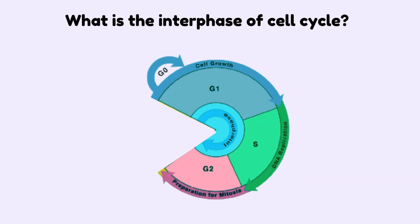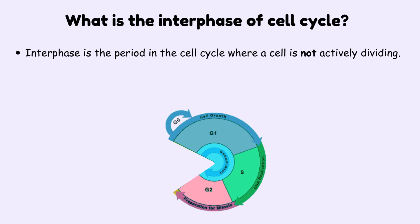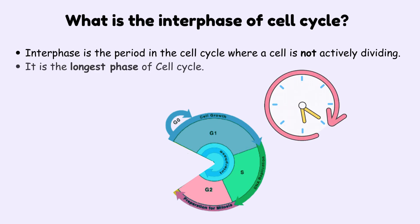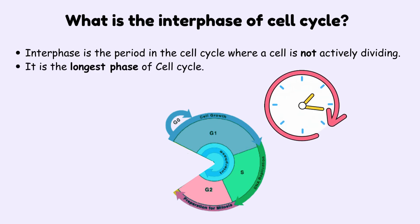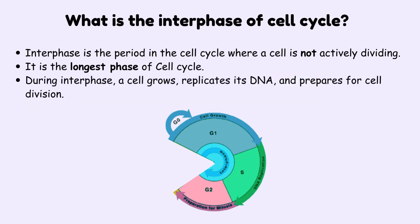What is the interphase of the cell cycle? Interphase is the part of the cell cycle where the cell isn't actively dividing. In fact, it's the longest phase of the cycle. During interphase, the cell grows, replicates its DNA, and gets ready for cell division.